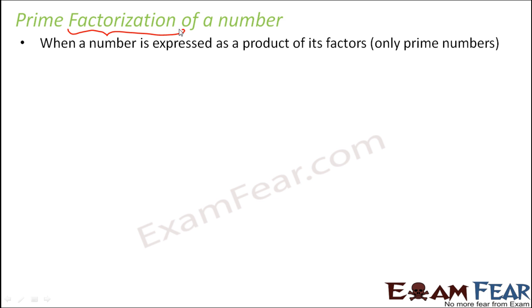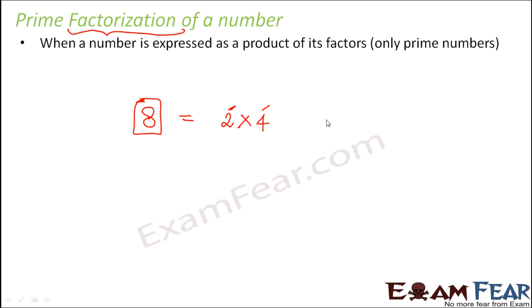Let's take a very common example. Let's talk about the number 8. So 8 can be written as 2 into 4. So 2 is a factor of 8 and 4 is also a factor of 8. We have written 8 as a product of two of its factors, so this means that 8 is factorized — this is called factorization of 8.